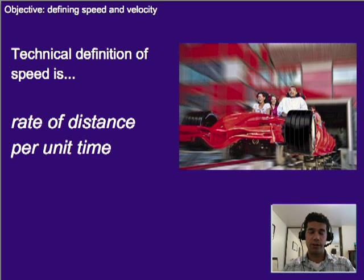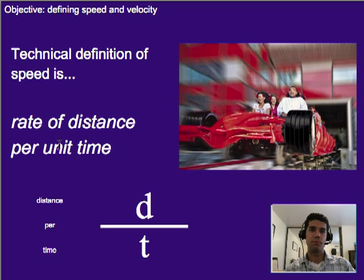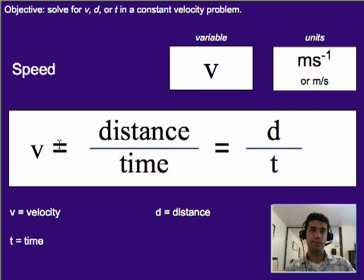So the technical definition of speed - if we're talking about this roller coaster car that's coming out, looks like an Indy car, I know, but it's a roller coaster - the technical definition is the rate of distance per unit time. What that means is distance per is a fraction bar, and then time would be given by variable t, which brings us to the equation for speed.